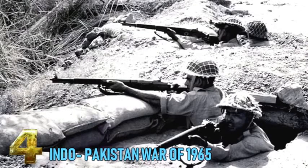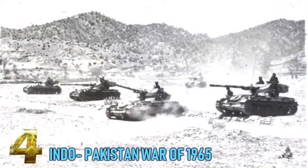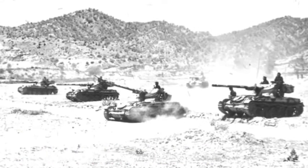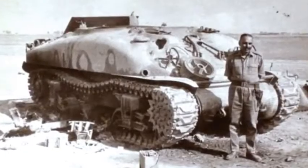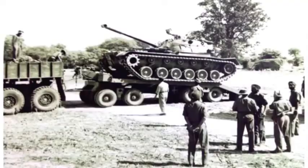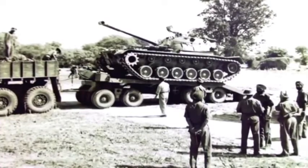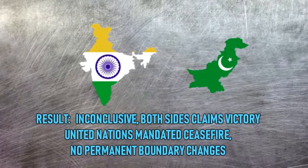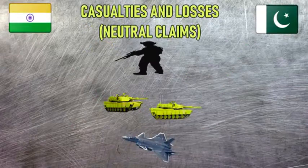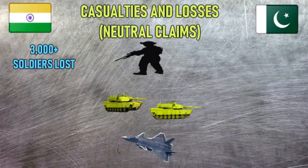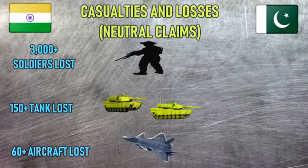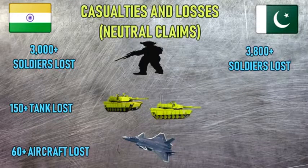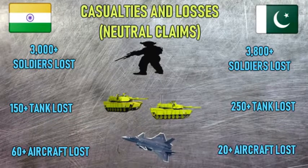The Indo-Pakistani War of 1965 was a 17-day war that caused thousands of casualties on both sides and witnessed the largest engagement of armored vehicles and the largest tank battle since World War II. India lost around 540 square kilometers of land primarily in Rann of Kutch, while Pakistan lost around 1,800 square kilometers. Hostilities ended after a UN-mandated ceasefire with no permanent boundary change. Casualties: India lost 3,000-plus soldiers, 150-plus tanks, and 60-plus aircraft; Pakistan lost 3,800-plus soldiers, 250-plus tanks, and 20 aircraft.